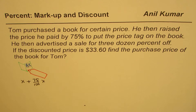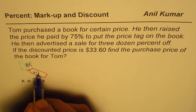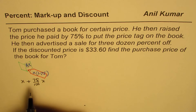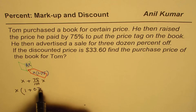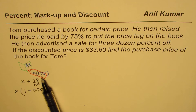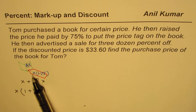So basically at this stage, the tag price is — we could take X common and write this as 1.75. You get 1 plus 75 divided by 100, which is 0.75, so it becomes 1.75. Basically, if a person wants to buy this book, then the price will be 1.75 times X, not just X. So that is the tag value.